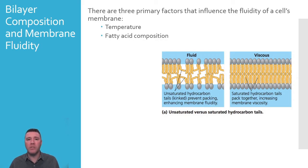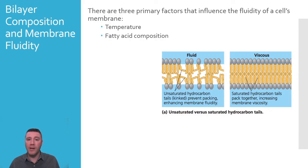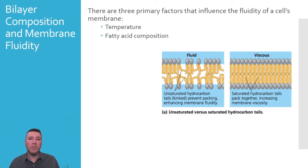Cell membranes typically have a variety of phospholipids to achieve just the right balance of fluidity. Additionally, cells can alter the composition of phospholipids in their membrane in response to changing environmental conditions. With decreasing or low environmental temperatures, cells increase the proportion of phospholipids with unsaturated tails to prevent the membrane from solidifying. And if environmental temperatures increase, membrane composition is adjusted to contain more saturated fatty acids to prevent the membrane from becoming too fluid.